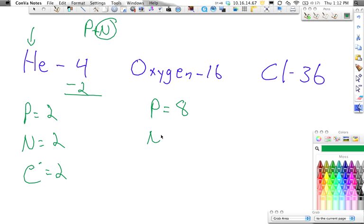That means that the number of neutrons, 16 minus 8, will give me a total of 8. And lastly, we see that my electrons, it's neutral, so therefore my electrons equal my protons.